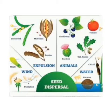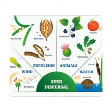Seeds of different plants have different special features that help them to disperse. In nature, wind, water, animals, and human beings help in the dispersal of seeds. They act as the agents of seed dispersal.